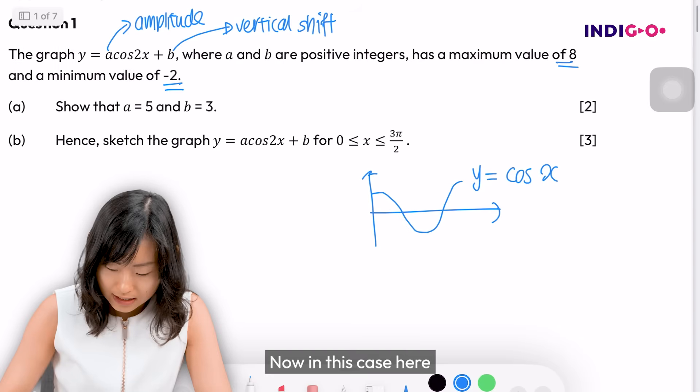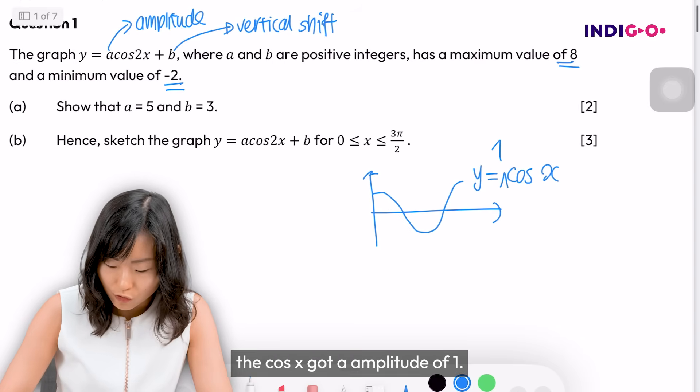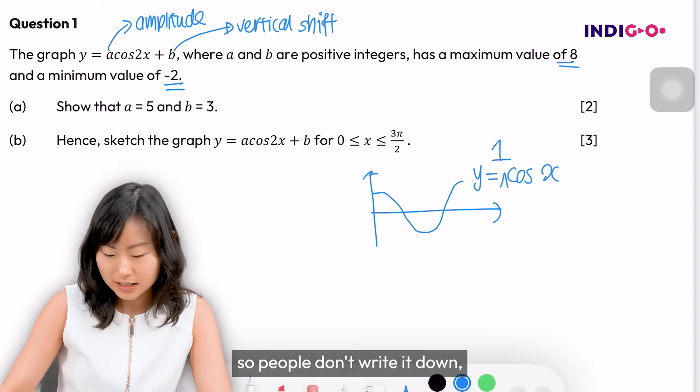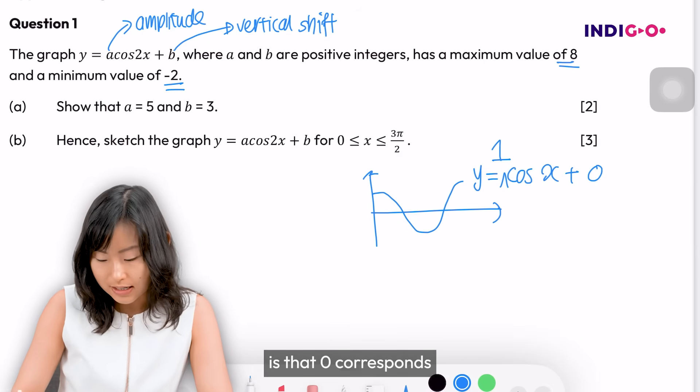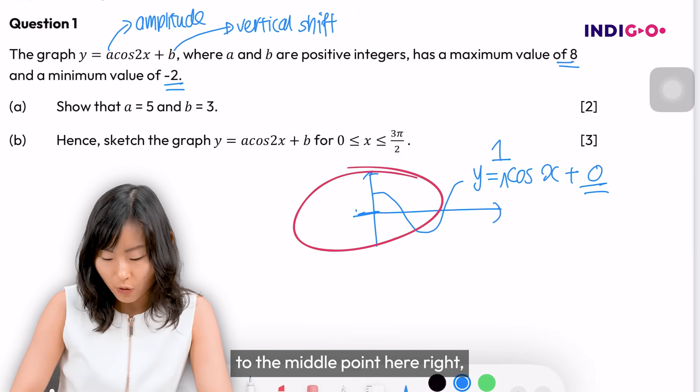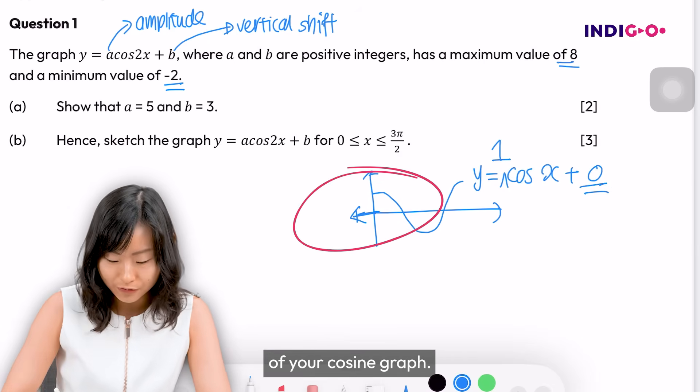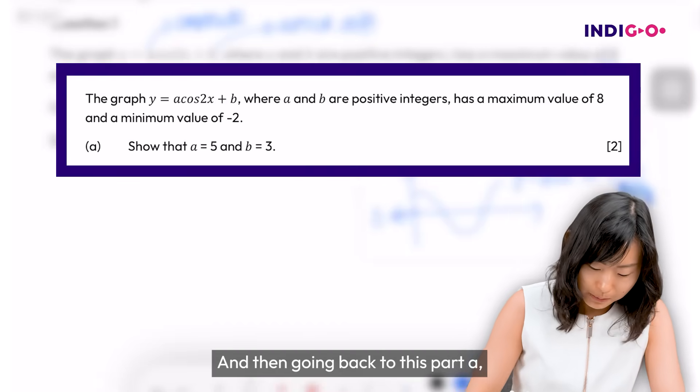Now in this case here, the cos of x has an amplitude of 1, but because it's 1 people don't write it down, and 0. So usually what I like to see is that 0 corresponds to the middle point here of your cosine graph.